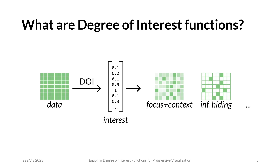Some common things we do with Degree of Interest Functions include enabling focus and context — for example, adjusting the opacity of data so that more interesting parts stick out — or using it for information hiding, which gives us more screen space for relevant parts of the data. In short, Degree of Interest Functions are great at helping us identify parts of the data that are interesting when dealing with massive datasets.